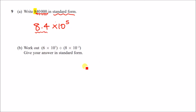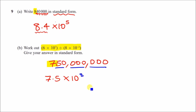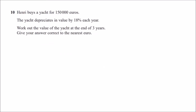Now part b: work out this entire expression and give your answer in standard form. This is easy — just enter everything including the brackets into your calculator. You should get 750 million. Then put that in standard form: highlight the first digit, which is 7, write 7.5, then count the digits after the 7 — that gives you 7.5 × 10⁸.